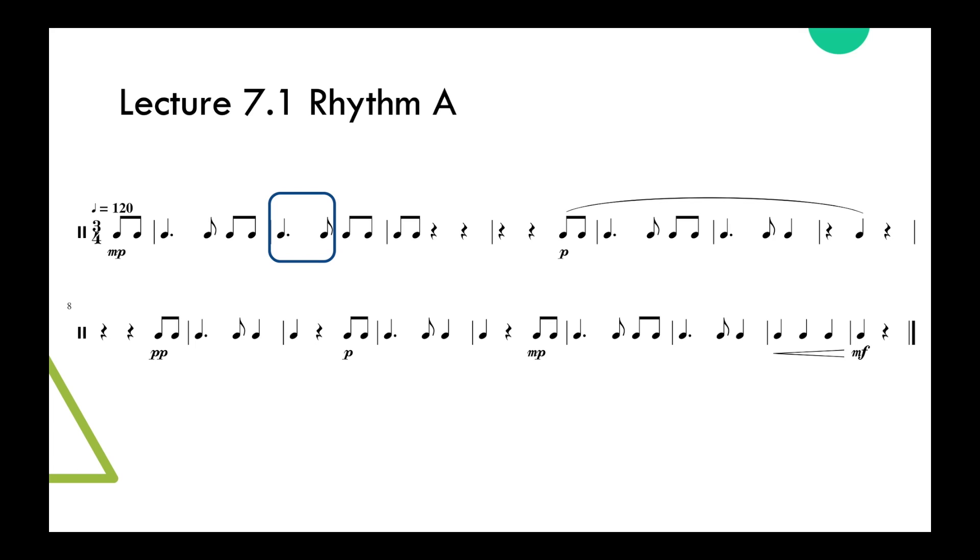Next measure, again, dotted quarter note plus an 8th note, and then 2 more 8th notes. Here I've got my 2 8th notes, and then a quarter rest, and a quarter rest again. Here you don't really feel the 2 plus 1, but I still like to try and see it that way as I'm scanning a rhythm. Next measure, 2 quarter rests. Notice that in 3-4 time, we don't use half rests. We use 2 quarter rests for 2 beats of rest. And then 1 beat with 2 8th notes in it.